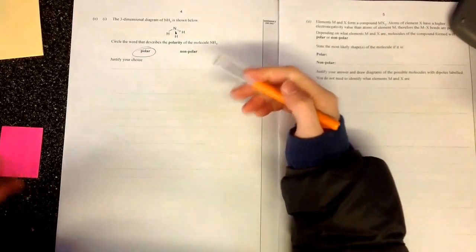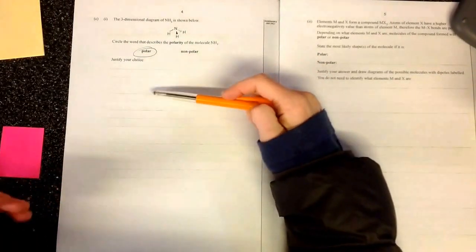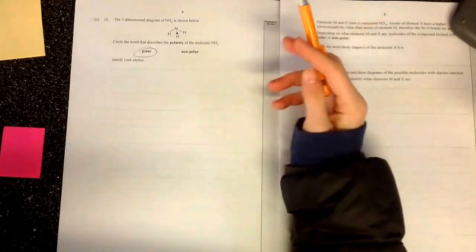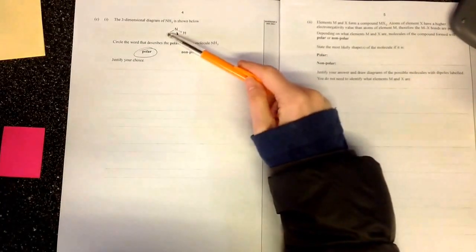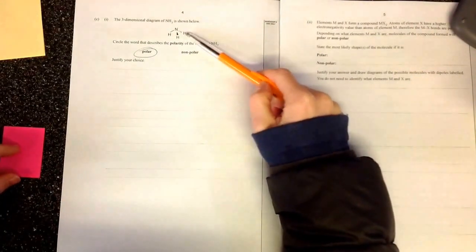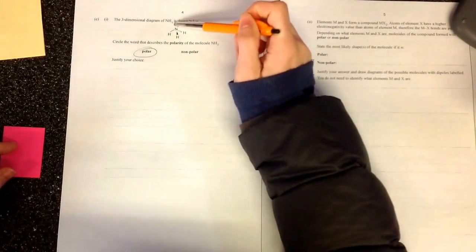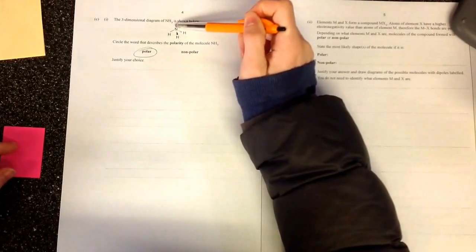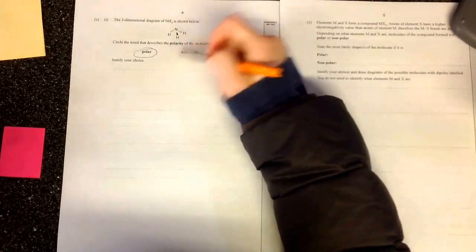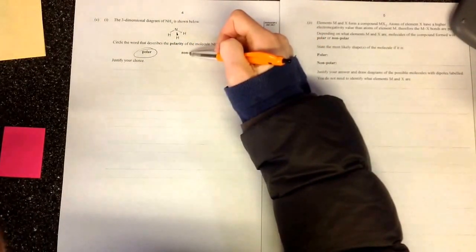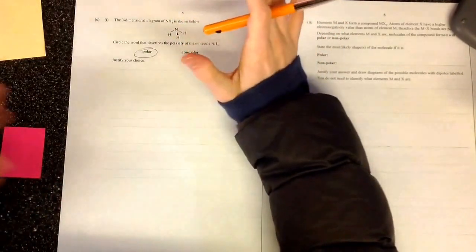If you're in doubt, look at the symmetry. If thinking of genders helps you, stereotypically you've got a girl in the middle and three guys around the outside and they're all pulling on the girl and lo and behold they pull her this way because there's no one over here to balance that out. If there was another hydrogen up here, the guys would all be pulling her equally in different directions and therefore she wouldn't move anywhere, therefore she'd be non-polar. Of course you can swap the analogy around, have a guy in the middle, girls around the outside, whatever. Hopefully that helps.